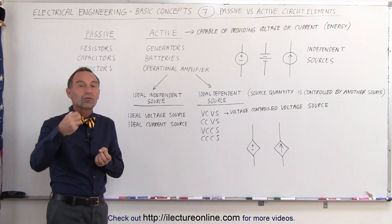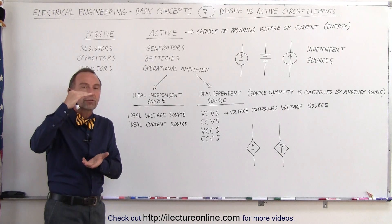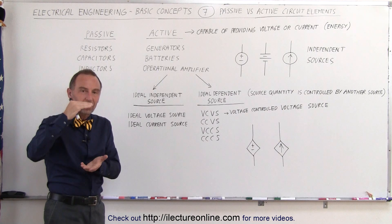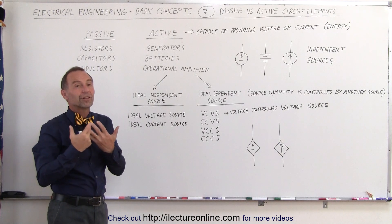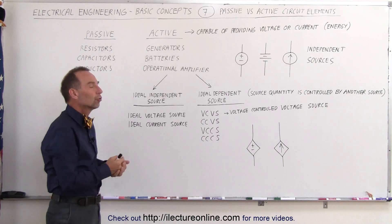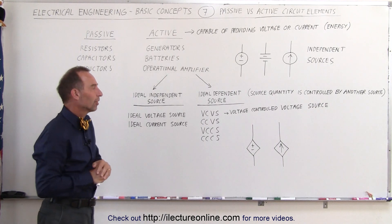Some sources, when you start drawing too much current, the voltage across the terminals begins to draw down or begins to decrease, and so therefore it's not a consistent or a totally independent source.